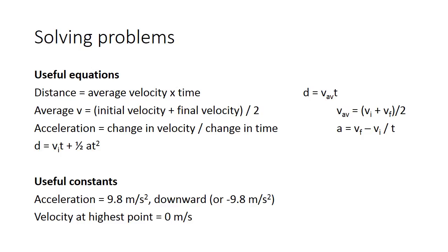The useful constants, the acceleration is going to be 9.8 meters per second squared downward, or negative 9.8 meters per second squared. If we're going to treat upward as positive, like we did in that last graph, we're going to treat downward as negative. Which means when we use our equations, it's helpful to put a negative in those equations. At the highest point, the velocity is going to be 0 meters per second.